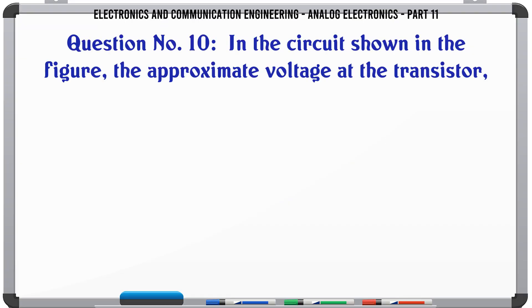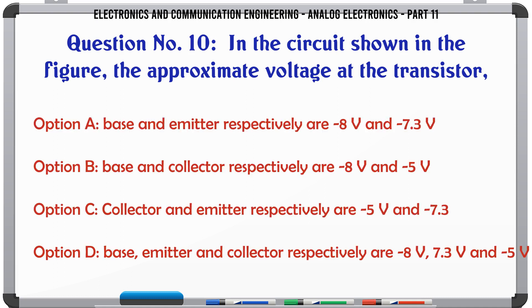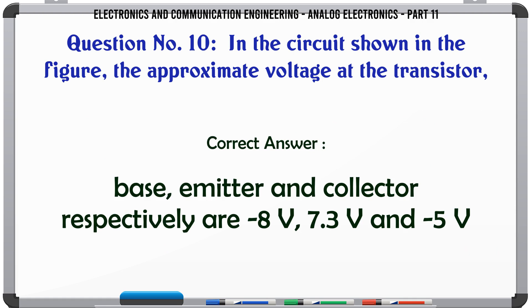In the circuit shown in the figure, the approximate voltage at the transistor. A. Base and emitter respectively 8V and 7.3V. B. Base and collector respectively 8V and 5V. C. Collector and emitter respectively 5V and 7.3V. D. Base, emitter and collector respectively 8V and 5V. The correct answer is: Base, emitter and collector respectively 8V, 7.3V and 5V.